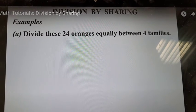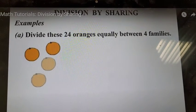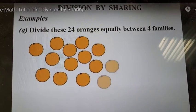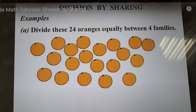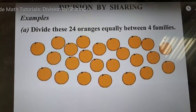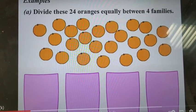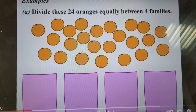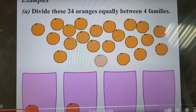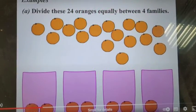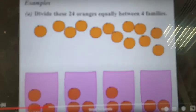The last strategy being looked at here is division by sharing. So I didn't mention this one in the beginning, but it's called division by sharing. Divide these 24 oranges equally between 4 families, and of course the division sentence would be 24 divided by 4. Because we're dividing by 4, we make 4 different containers or 4 different groups, and then we're going to share the 24 equally in each group.